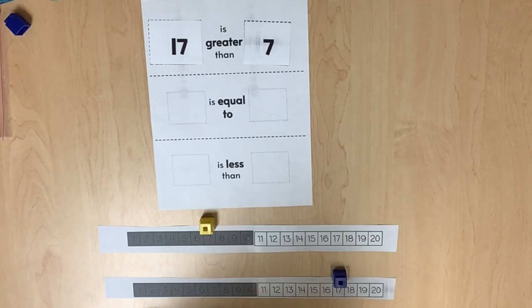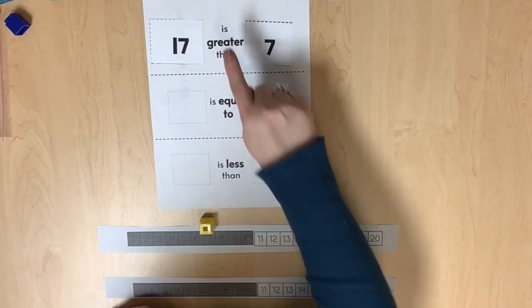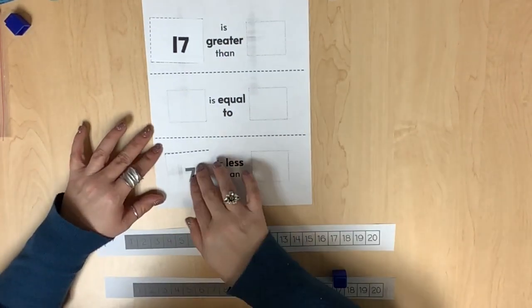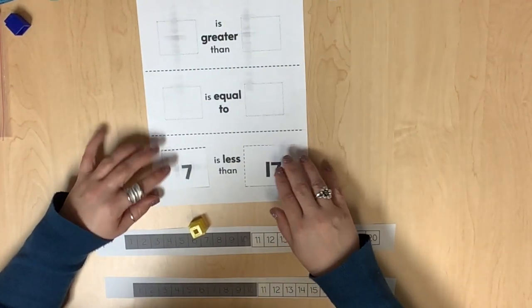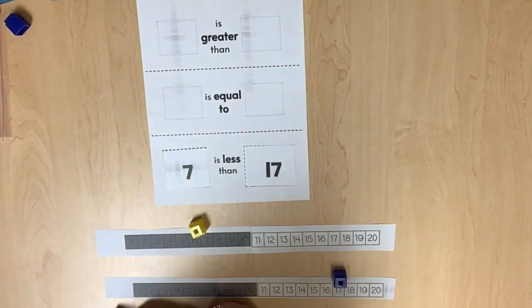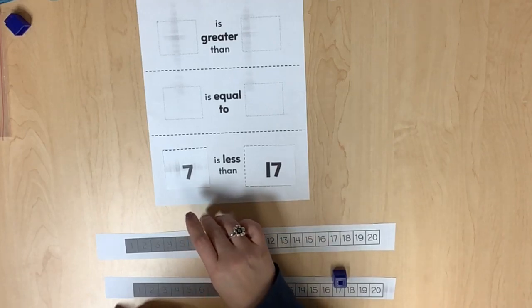Review the vocabulary greater than, less than, and equal to. Present two number cards and comparison statements so that students can describe the values in relationship to one another.